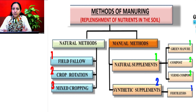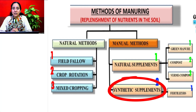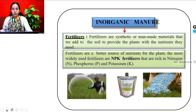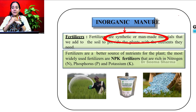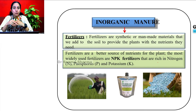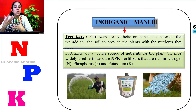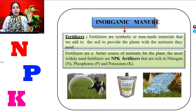Because the human population is increasing at a very fast rate, farmers cannot depend only on natural methods or organic supplements to meet food requirements. They must also use inorganic supplements — fertilizers. Fertilizers are synthetic or man-made materials added to the soil to provide the plant with the nutrients it needs. They are a better source of nutrients for the plant and are rich in three key nutrients required in large amounts: nitrogen, phosphorus, and potassium. Using fertilizers speeds up growth, increases productivity, and improves crop yield.